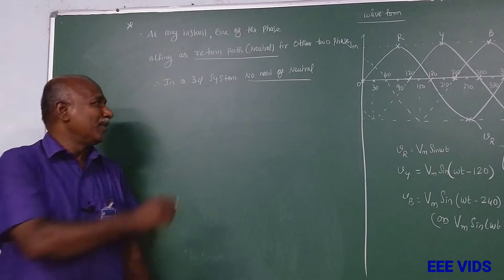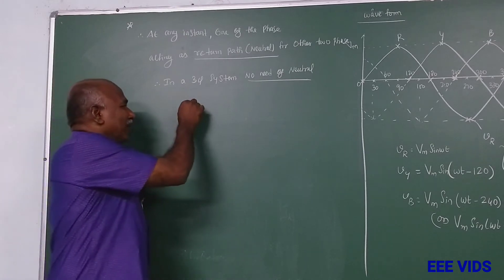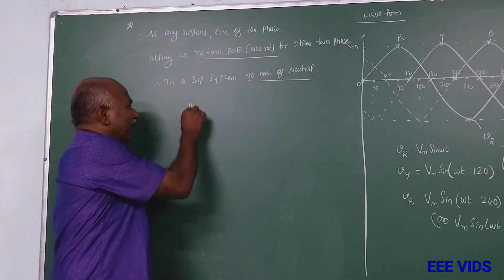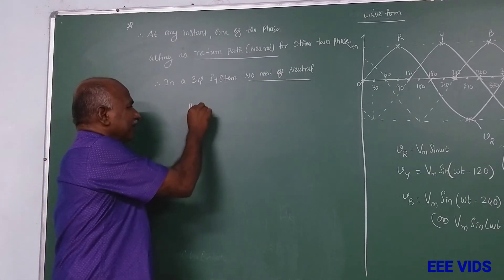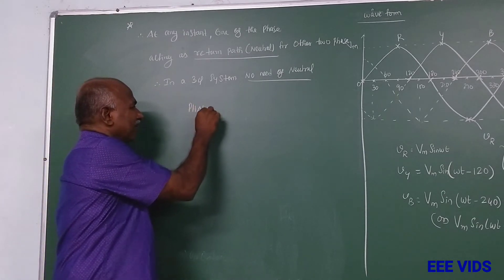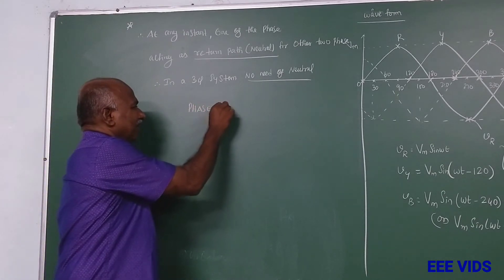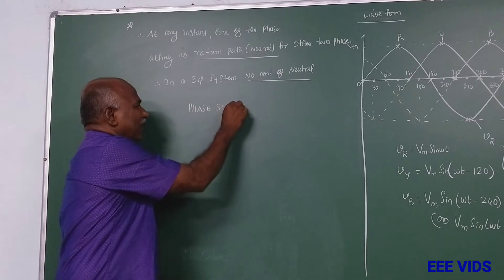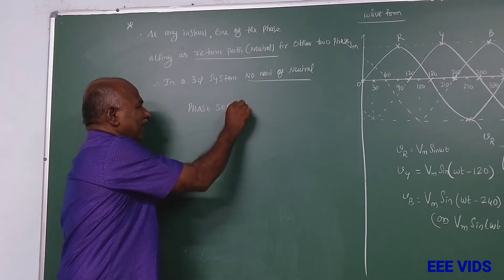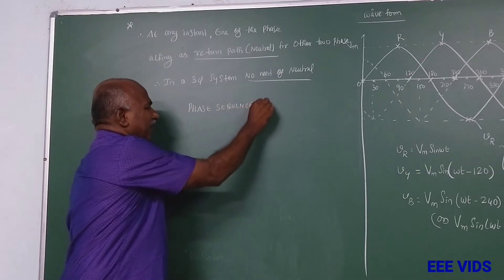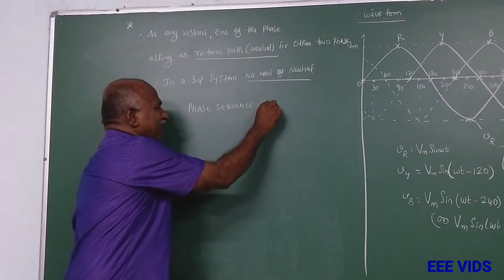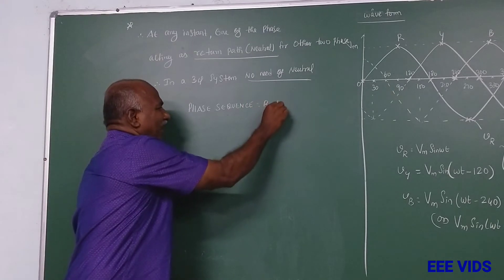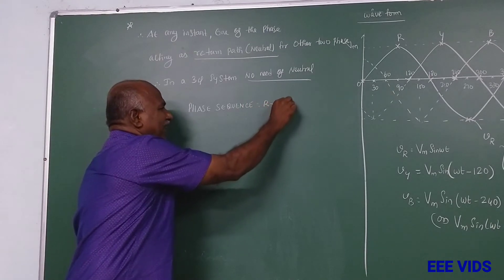Three phase sequence — the answer is RYB. The phase sequence is RYB.